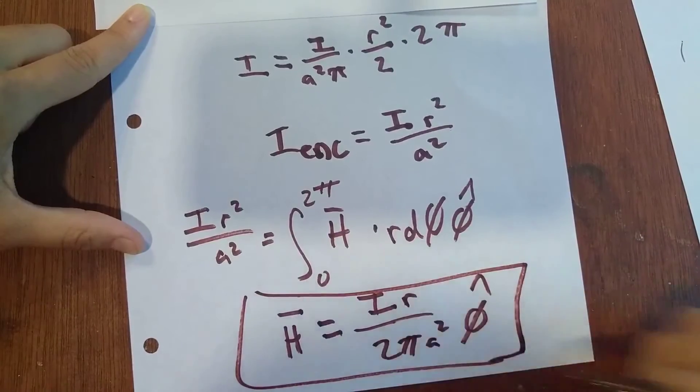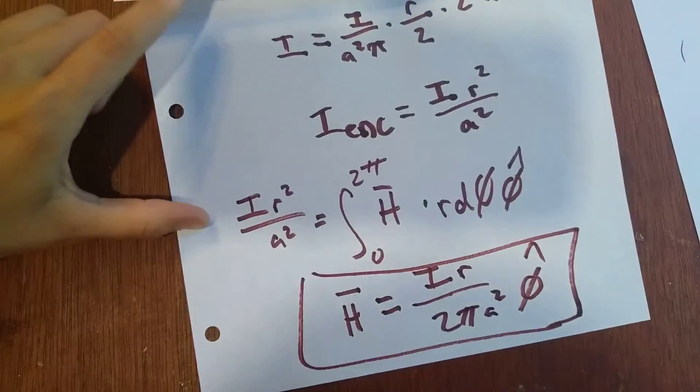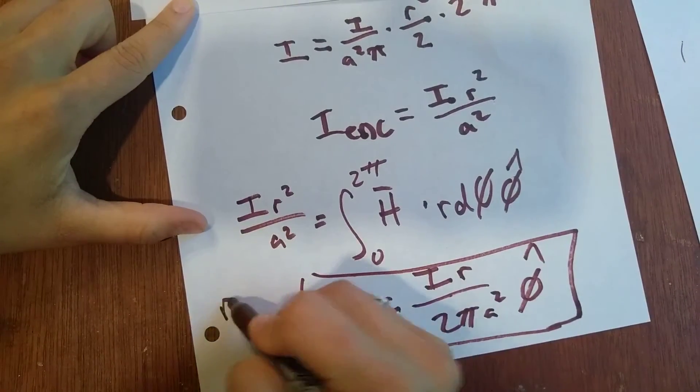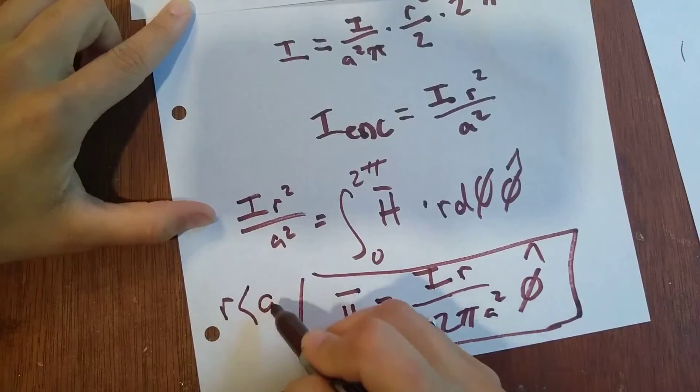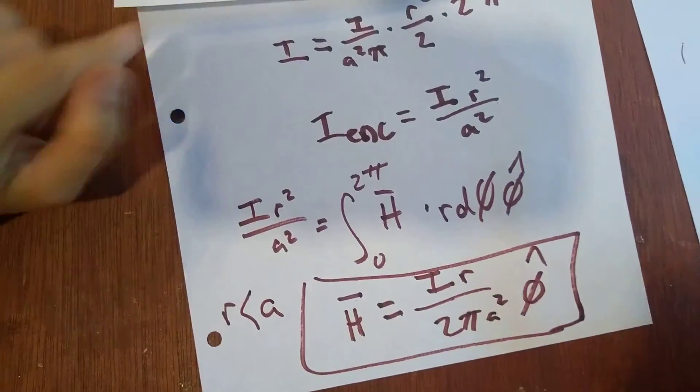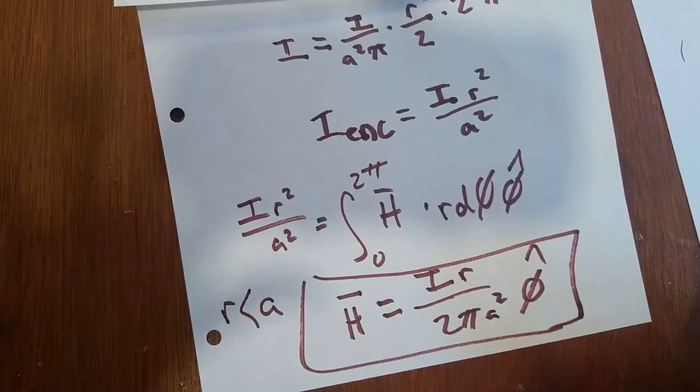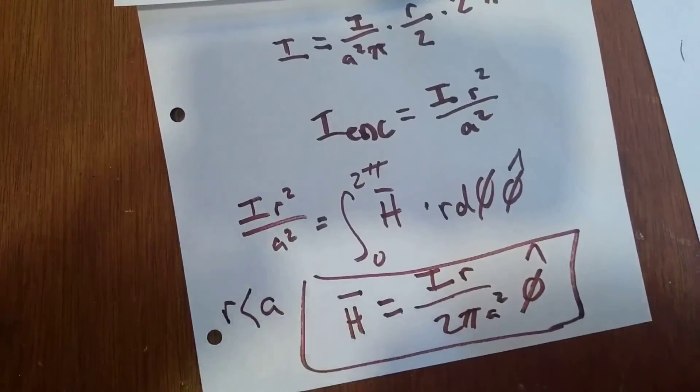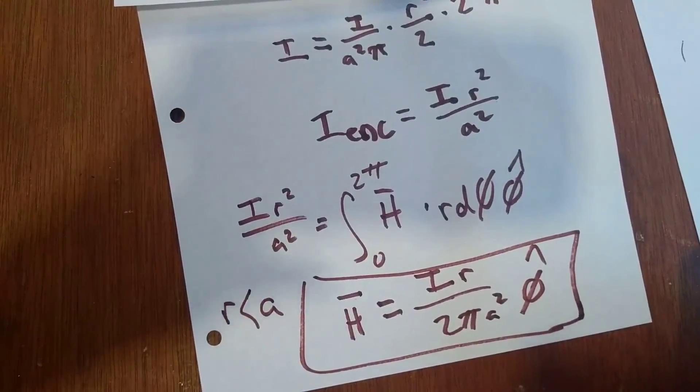So this is the second half of our answer. This is the magnetic field where R is less than the radius of the cylinder. I hope this helped at least a little bit. Sorry it was so long-winded. But there you go. Alright, bye guys.